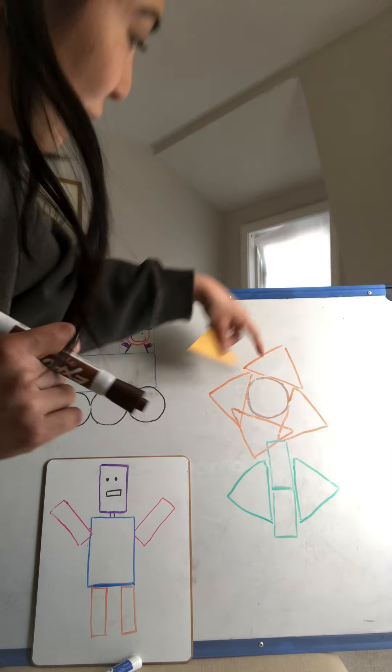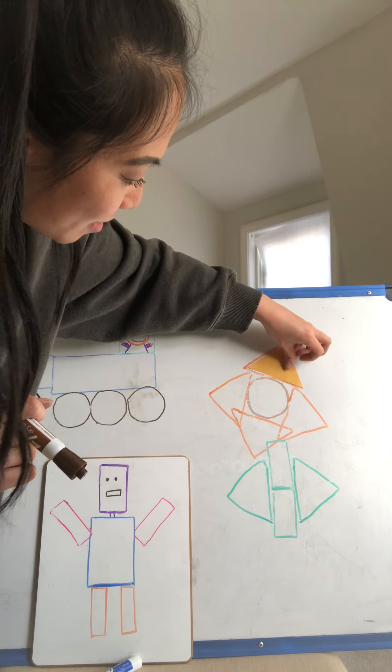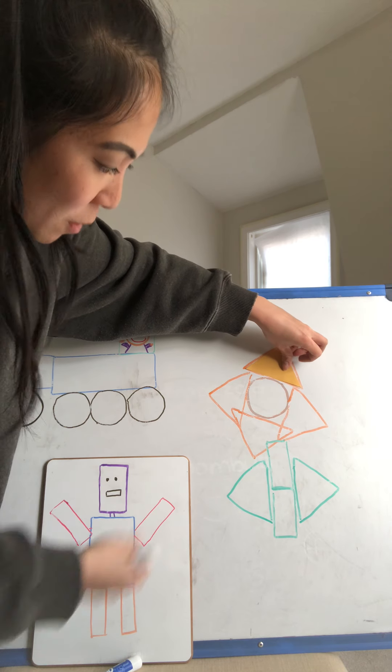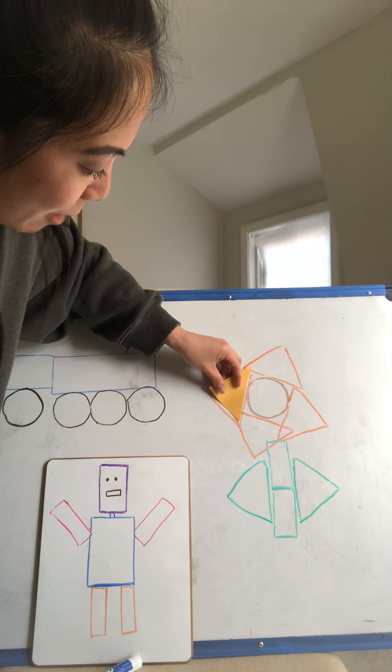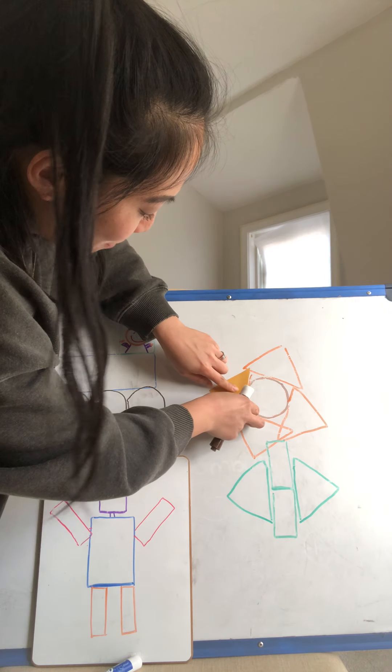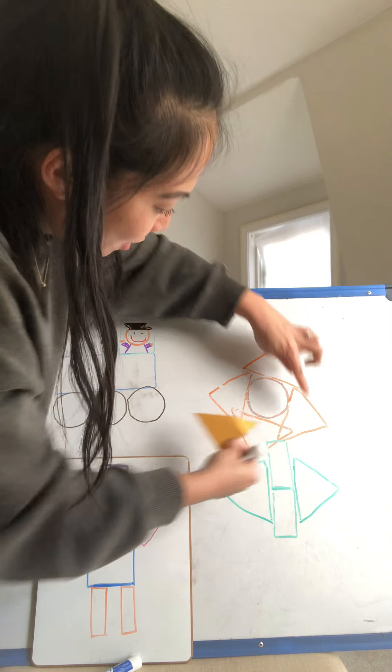And then for the petals, I used a triangle. And you can use any color you want. I chose orange and I just went around and I traced it with my orange marker. Just like that.